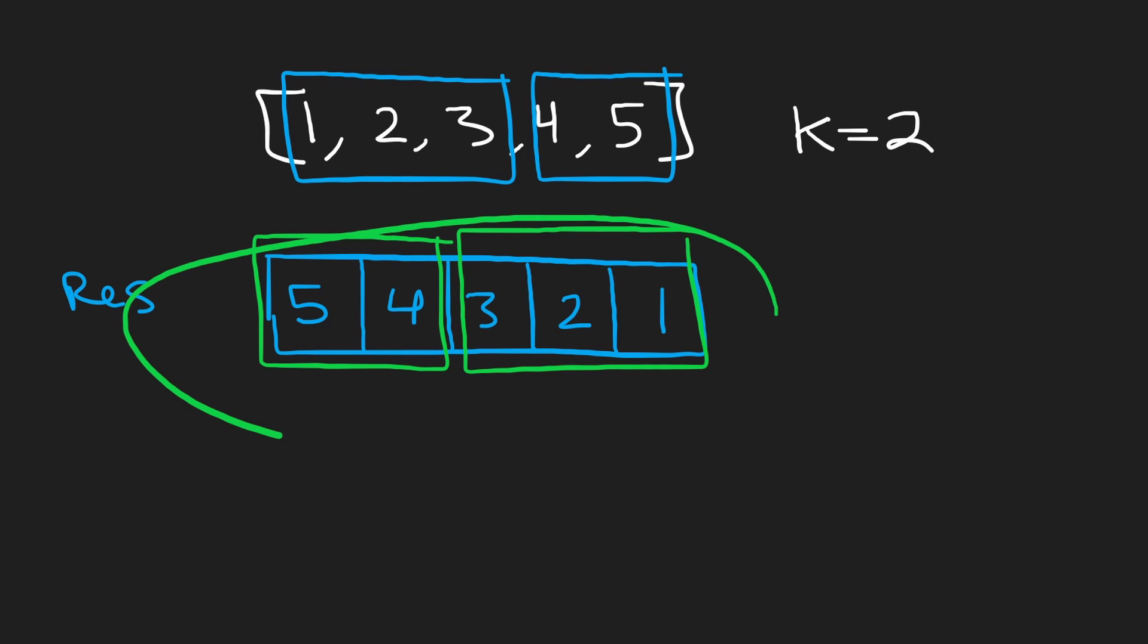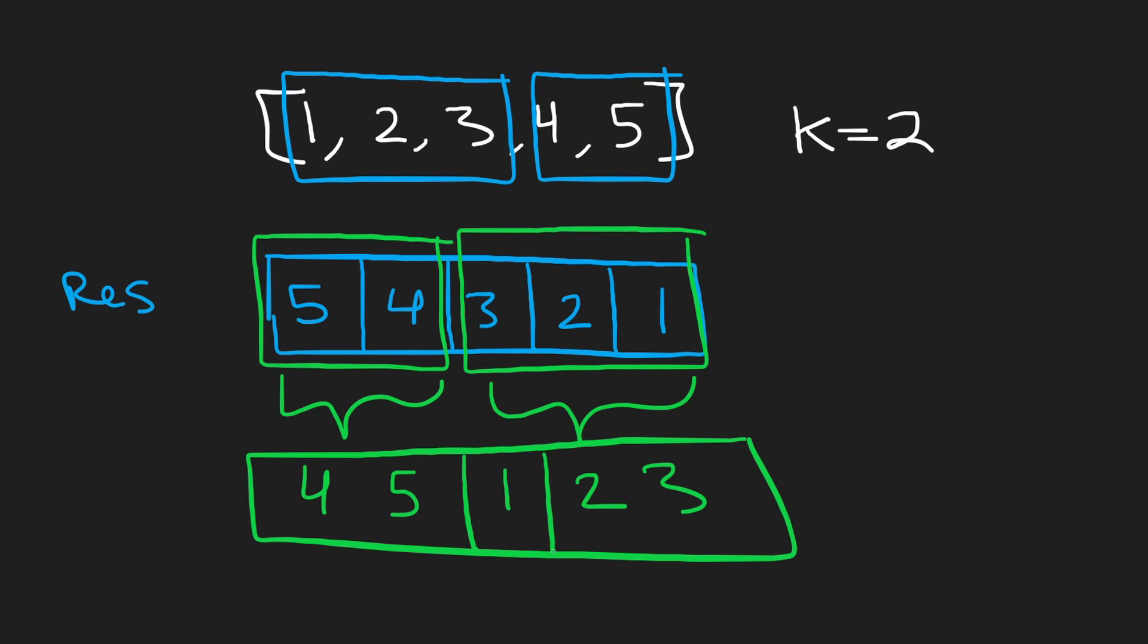But what can we do to this array which is just the reversal of the input array? What can we do to this array to get it in the rotated format that we want? Well we just took the entire array reversed it so how about we take the first k elements of the array this portion, reverse that and we take the remaining portion of the array and reverse that as well. What's going to happen if we do that? Reverse this we get four five. Reverse this we get one two three. Is this the rotated array that we were looking for? Yes it's exactly what we were looking for.